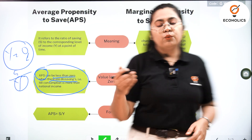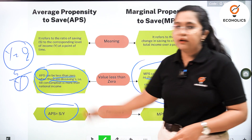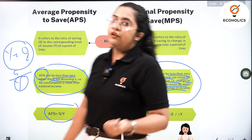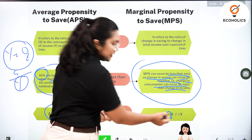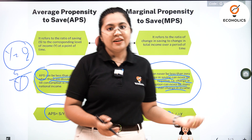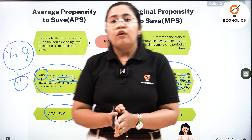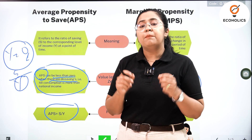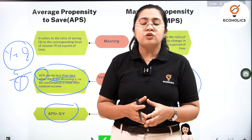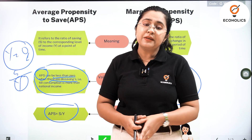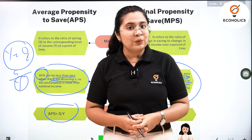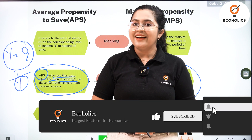To summarize the formulas: APS is savings upon income, which is S upon Y. MPS is change in savings upon change in income — the delta sign represents change — so ΔS upon ΔY gives you MPS. That is the concept of average propensity to save and marginal propensity to save. We will deal with more macroeconomic topics related to APC, MPC, and many more Keynesian concepts in future videos. Till then, stay tuned, subscribe to our channel Echoholics, and bye-bye.